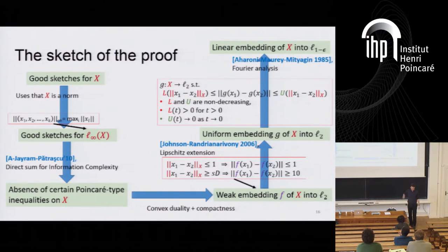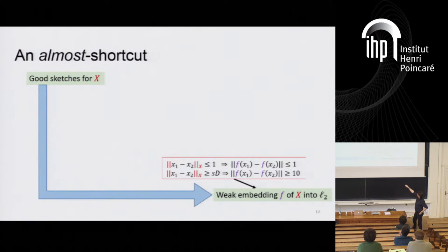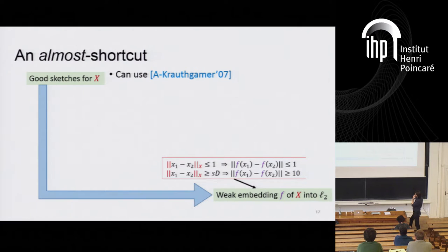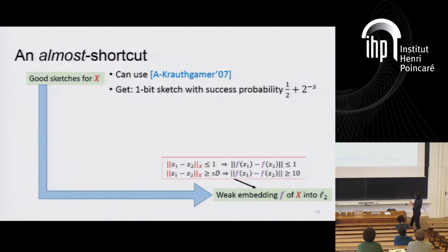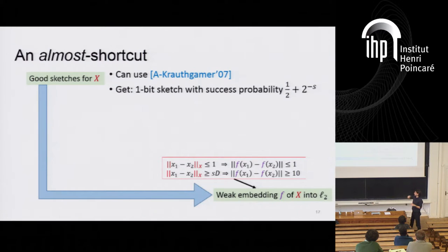I won't go into too much detail, but I want to highlight a few steps. The first one is going from good sketches to weak embeddings. Here is an almost shortcut — something that does not quite work, but highlights what the problem is about. One option is to use a theorem shown with Robby Krauthgamer a while ago, which showed that if you have good sketches of size S, then you can reduce that sketch to really one bit, and the success probability is something like half plus two to the minus S.